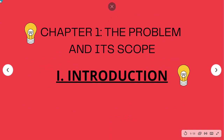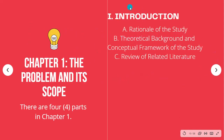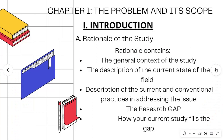Chapter 1 is titled 'The Problem and Its Scope.' For Part 1, Introduction, there are three sub-parts: A — Rationale of the Study; B — Theoretical Background and Conceptual Framework of the Study; and C — Review of Related Literature. Let's talk about that.